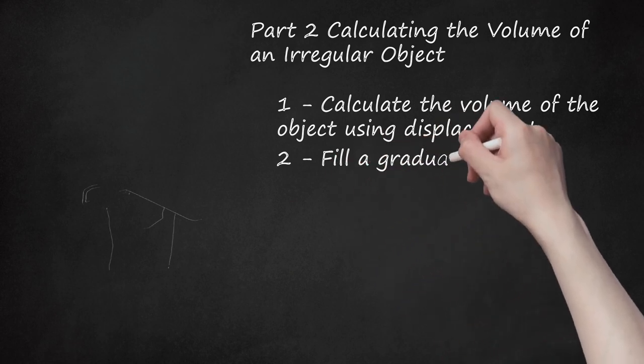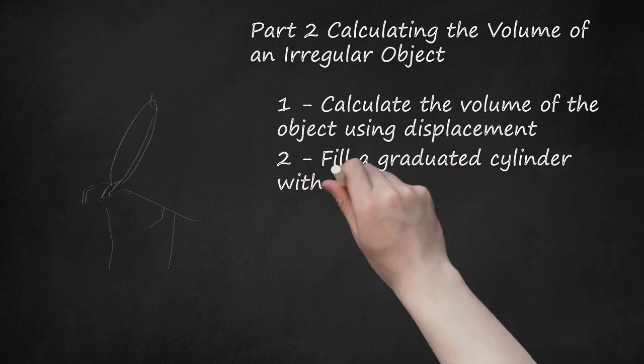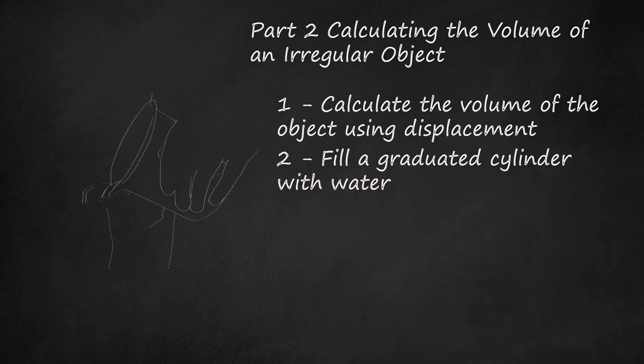Step 2: Fill a graduated cylinder with water. A graduated cylinder is a piece of lab equipment that has graduated markings on the outside and allows you to measure the volume of liquids. Make sure the graduated cylinder is large enough to contain your object.